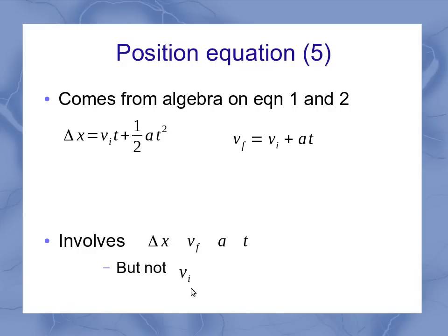This way, I've got a whole set of equations, each which involve four variables, but not one of them. And doing that algebra, I get an equation very similar to my first one, but I've got the final velocity, and I've got a negative sign in there.